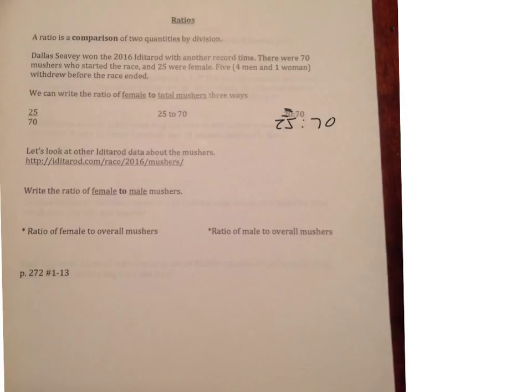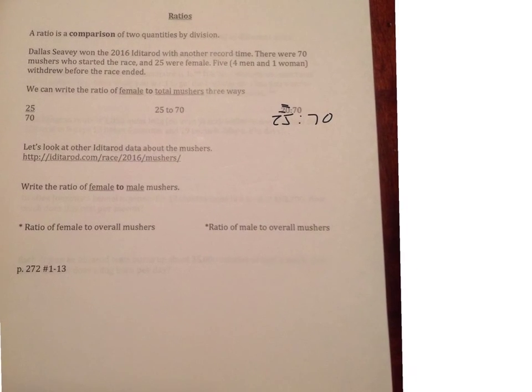We can write the ratio of female to total mushers three ways. So the first way is 25 with the fraction bar and 70. Then we have 25 with the words two, T-O, 70. And then we have 25 colon 70. I have a typo there where it says 20, so just cross that off and make that 25. So three different ways that we can write a ratio.